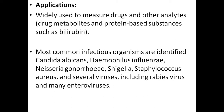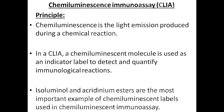This is how we can quantify the substance in fluorescent immunoassay. Applications of FIA include measuring drugs and other analytes like drug metabolites, protein-based substances such as bilirubin. Most common infectious organisms like Candida albicans, Haemophilus influenzae, Neisseria gonorrhoeae, Shigella, Staphylococcus aureus, and several viruses including rabies virus and many enteroviruses can be detected using fluorescent immunoassay.